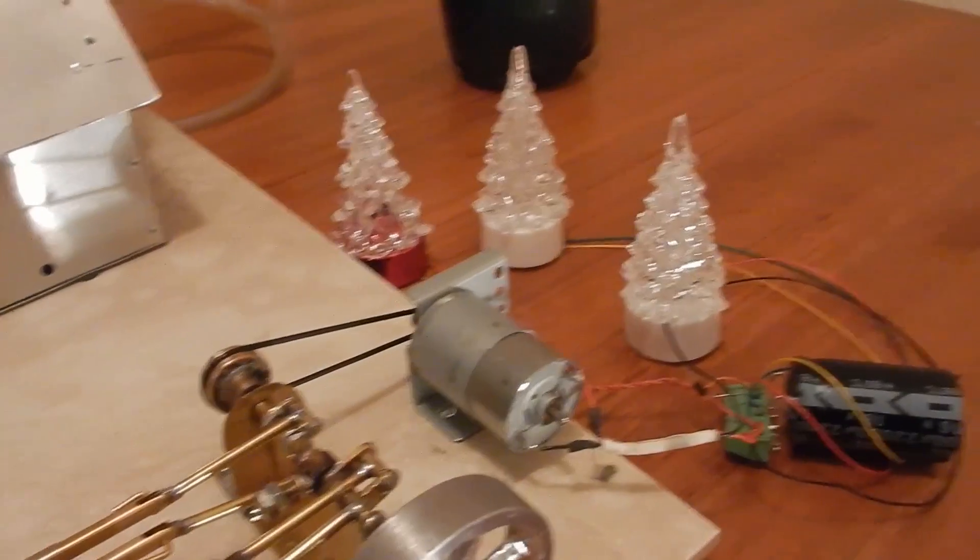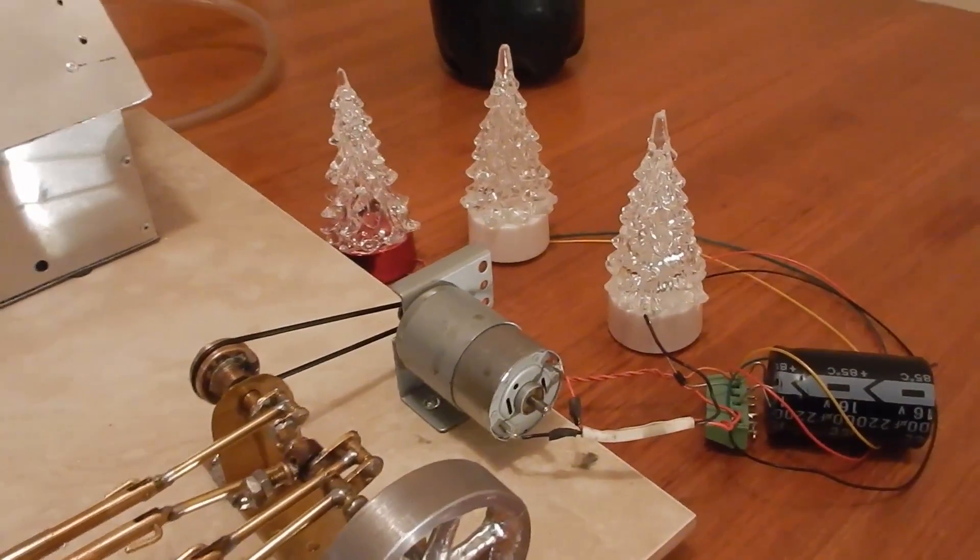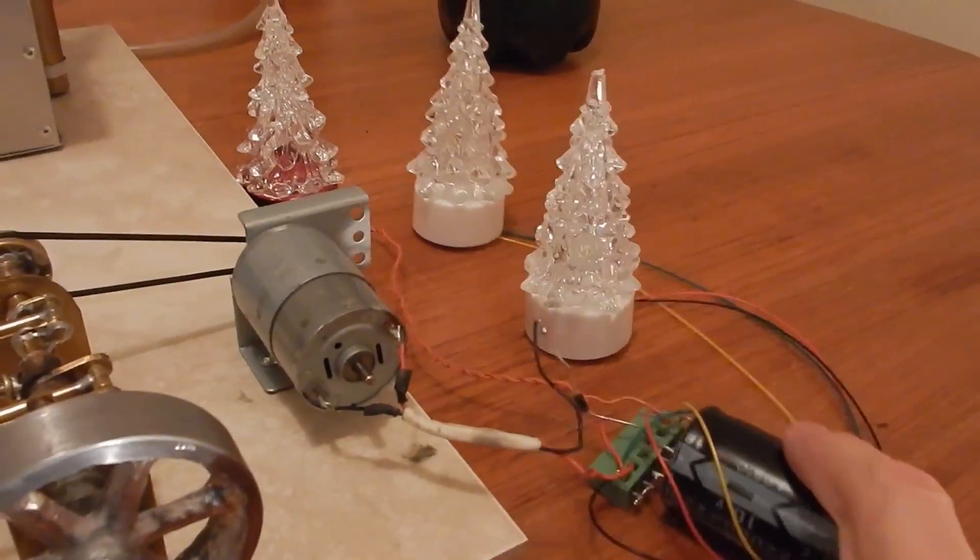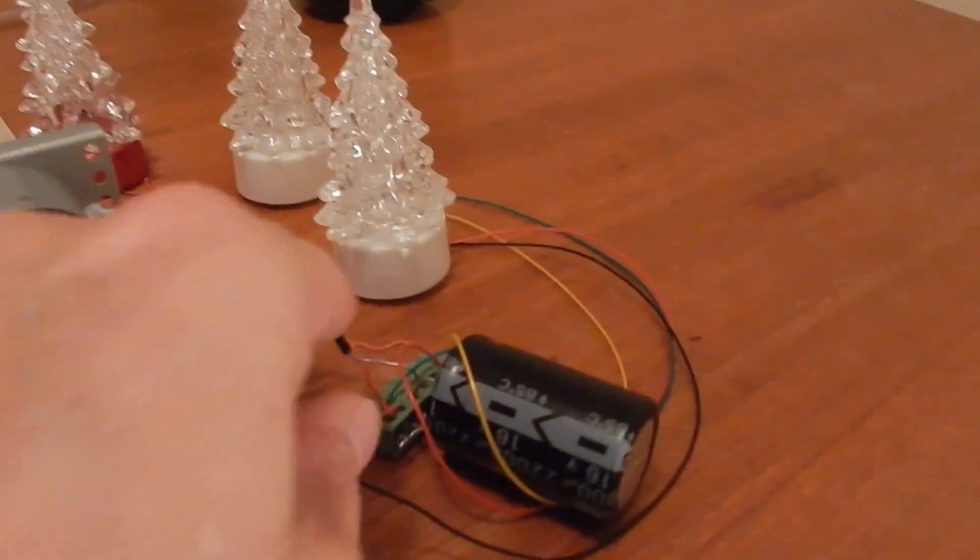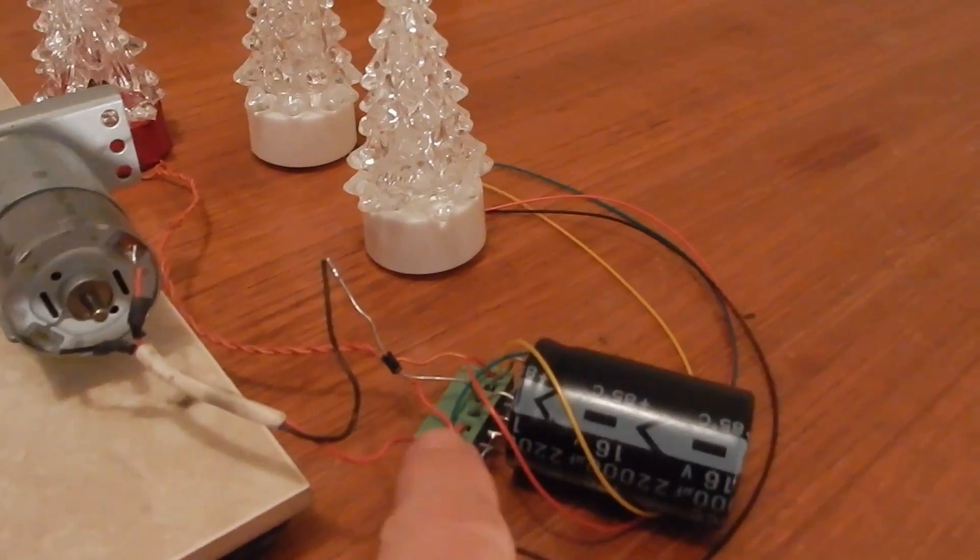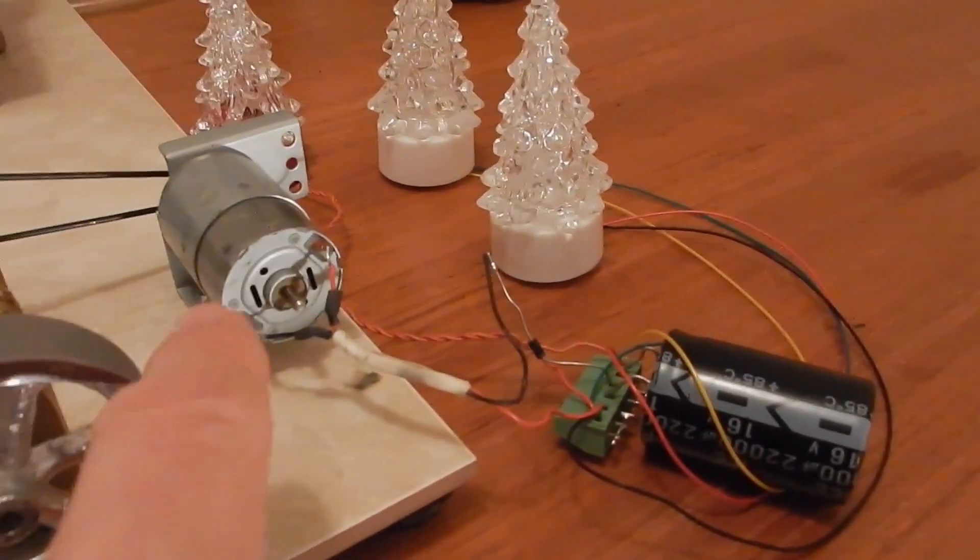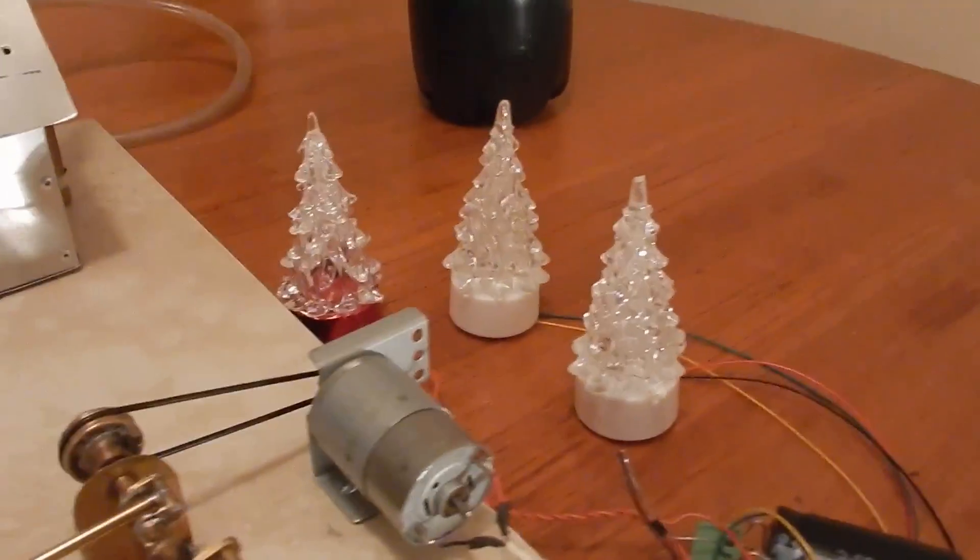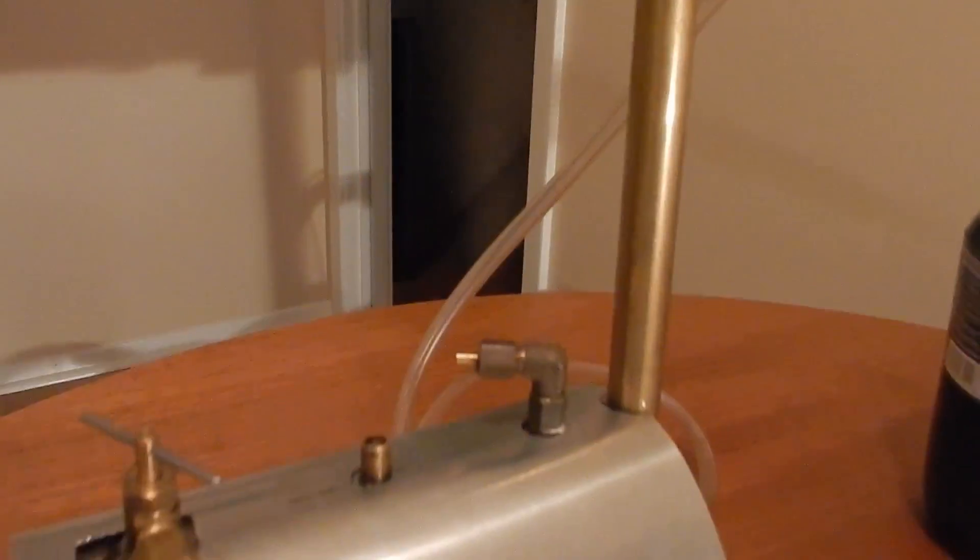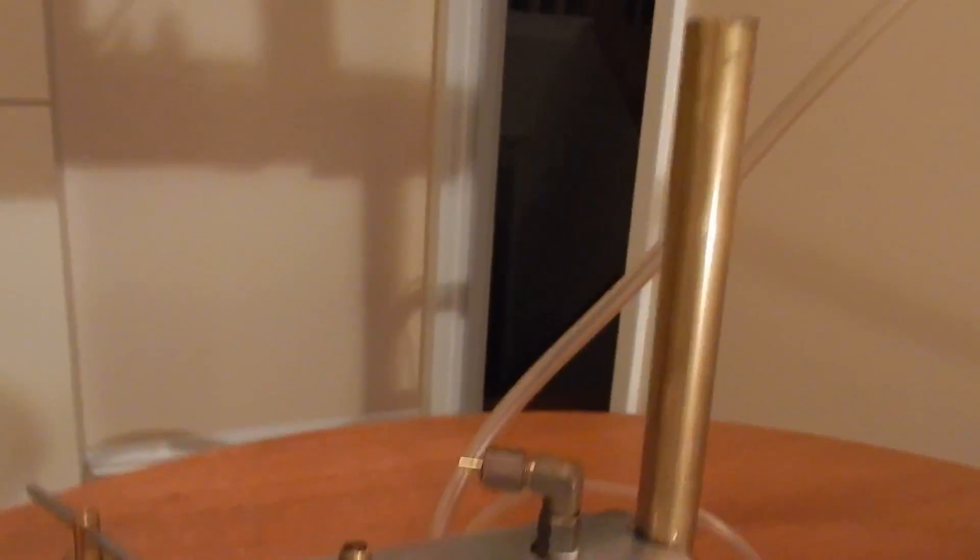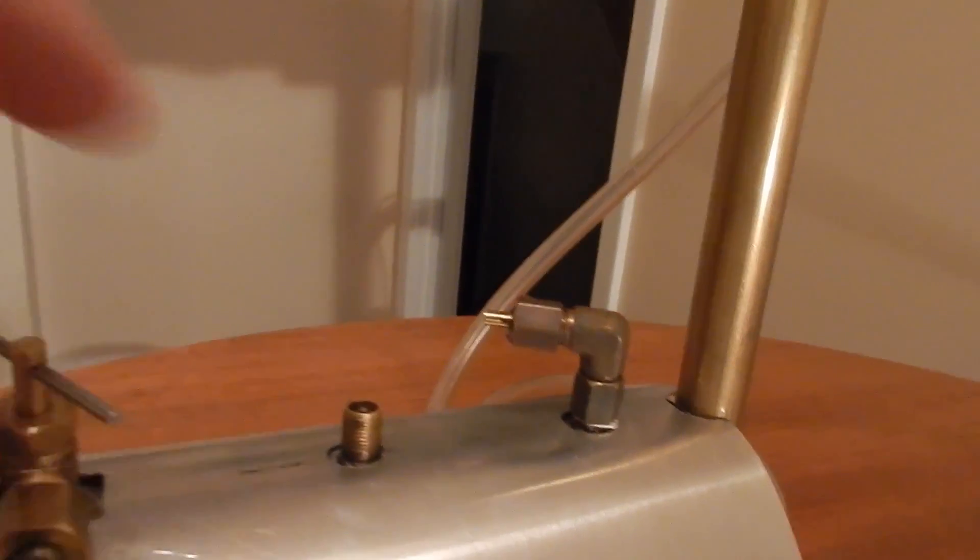I connected my three Christmas trees there and as you can tell I have a capacitor here, so that's 22,000 microfarads, and I have a little diode there to prevent it from discharging back into the generator and the motor. The steam is escaping from the pressure release valve.